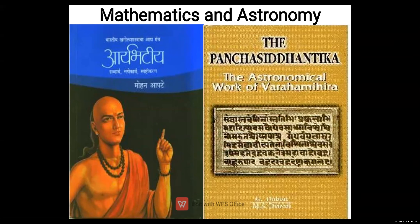The scientist Aryabhata wrote the book Aryabhatia, which included various formulas for mathematical operations. Aryabhata was also an astronomer.